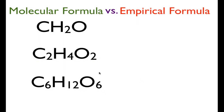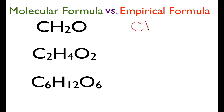Here we have some more molecular formulas: formaldehyde, acetic acid, and glucose. The molecular formula for formaldehyde is CH₂O — that is C₁H₂O₁ — and that is not reducible. So in this case, the empirical formula and the molecular formula are the same: CH₂O. Now for acetic acid, we have C₂H₄O₂. All three subscripts are divisible by two, so the empirical formula is CH₂O.